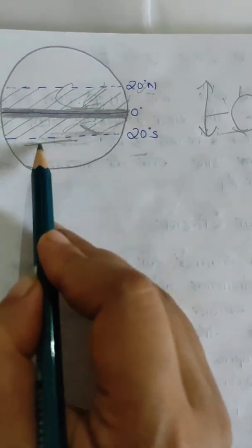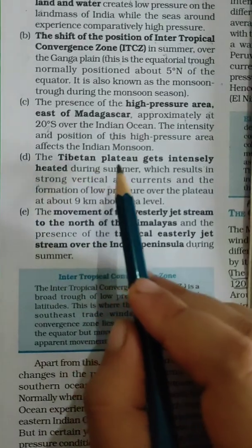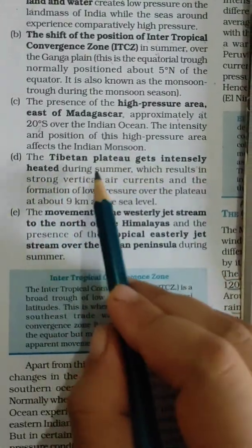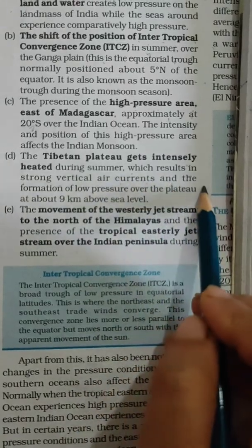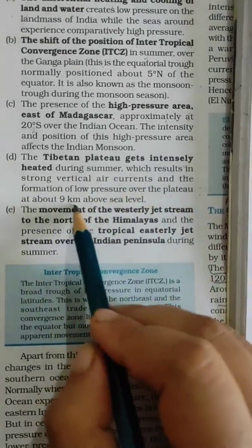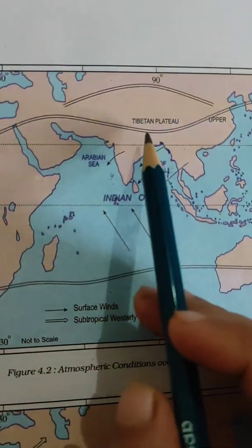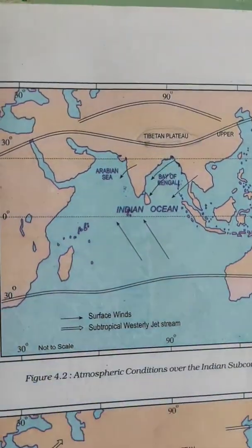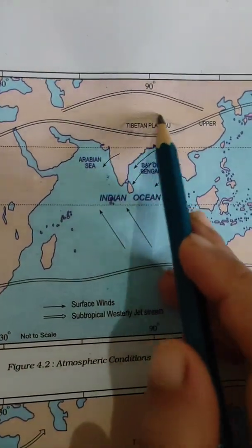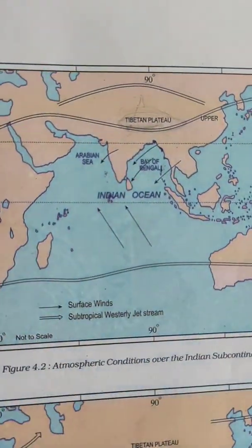Fourth, the Tibetan Plateau gets intensely heated during summer, which results in strong vertical air currents and the formation of low pressure over the plateau at about 9 km above sea level. As a result, it creates a low pressure area in this region and also creates vertical movement of air currents.